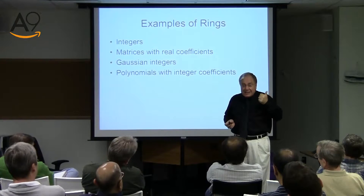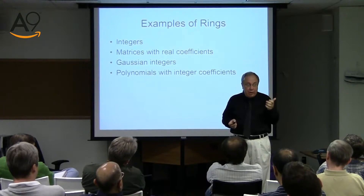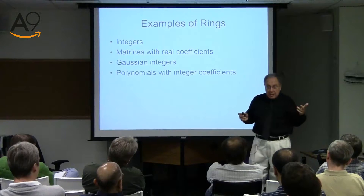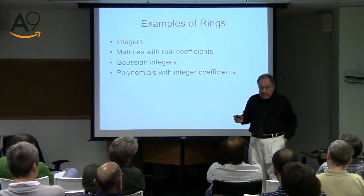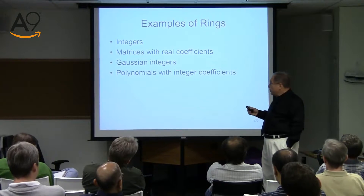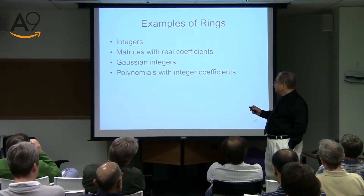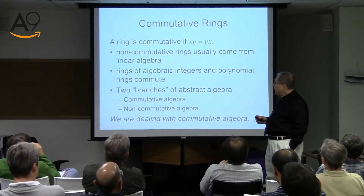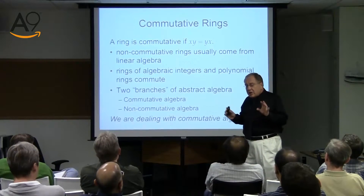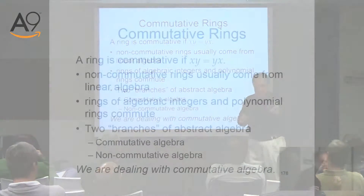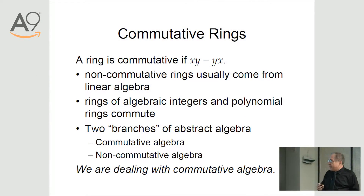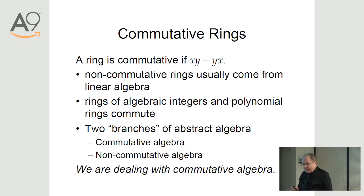Also polynomials with integer or real coefficients — these could be univariate polynomials (with one variable X) or multivariate polynomials with one, two, three, or however many variables. And Gaussian integers.